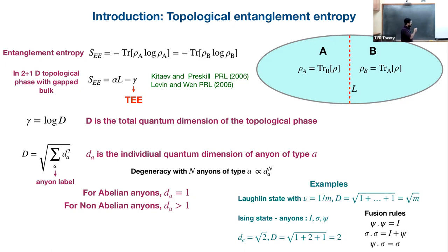Entanglement entropy is just the von Neumann entropy of this density matrix rho_A. What was shown in these papers was that if the system is topologically ordered and if you take the cut L to be large enough compared to any correlation length in the problem, then this entanglement entropy behaves as follows: there's a part which goes linear in L with some non-universal alpha, and then there's this universal part gamma, which is called topological entanglement entropy. And it's also shown that gamma equals log of the total quantum dimension T.